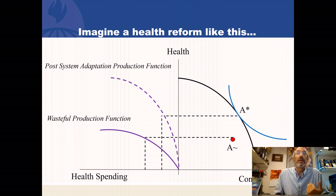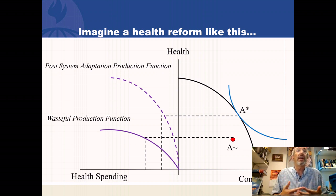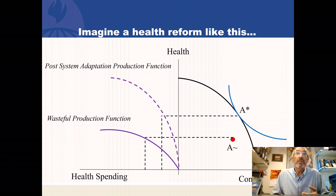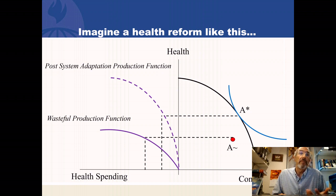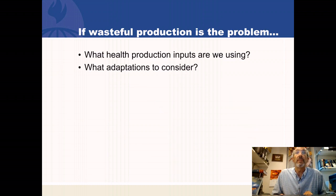These considerations show that if you look at the US in an international context, we're spending more and not getting life expectancy — we're getting something else that no one I've ever asked could tell us exactly what it is. It's not art galleries, not corrected social disparities, not great risk protection. What it sure is, is rich doctors and drug company executives. We're not acting like a good economist would.